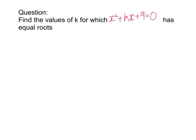Okay, we also have a question on this next slide where you're asked to find the values of k for which x squared plus kx plus 9 equals 0 has equal roots. So if it has equal roots, let's first of all write down what that means. When it has equal roots, we're saying b squared minus 4ac is equal to 0.